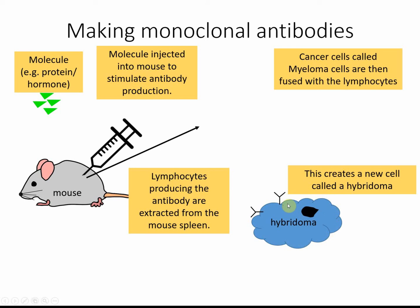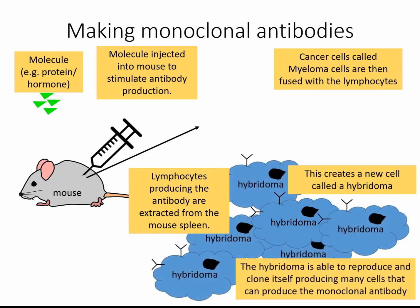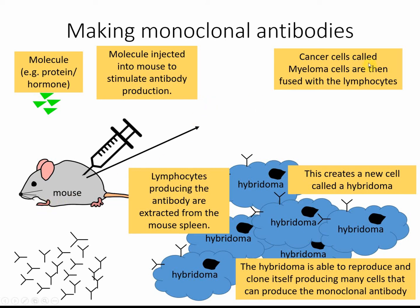We fuse the lymphocytes and the myeloma cells together and they form a new type of cell called a hybridoma. This hybridoma cell is like a cancer cell — it can keep reproducing and dividing by mitosis. It can also produce the antibodies, because it has the characteristics of both cells. These hybridoma cells are able to reproduce many, many times and clone themselves, and they start to secrete the antibodies that we want. We'll need to kill off any lymphocytes that are not hybridomas — there's some selection going on — but essentially that's how we make monoclonal antibodies.